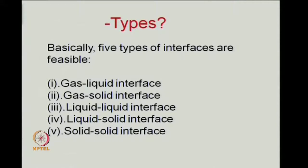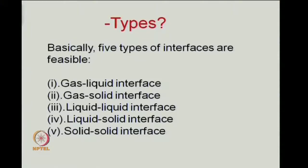When we think about the types of interfaces that we may come across, basically five types of interfaces are feasible: a gas-liquid interface, a gas-solid interface, a liquid-liquid interface, a liquid-solid interface, and a solid-solid interface. Two gas phases could not possibly have a stable interface because intermingling of gases would naturally occur.